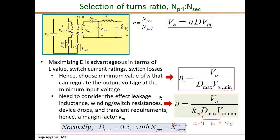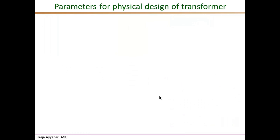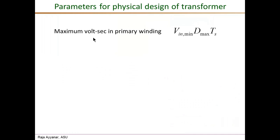Those are the two turns ratio selections. We also need several other parameters for the physical design of the transformer. The first is the maximum volt-seconds applied to any winding, which is useful in determining the core area and number of turns. We give the expression for the primary winding volt-seconds; volt-seconds for all other windings are related by the turns ratio. At D_max — when input voltage is at its minimum — the maximum volt-seconds equals V_in_min times D_max times T_s. If the input voltage is higher, then D is smaller, and the product remains equal.